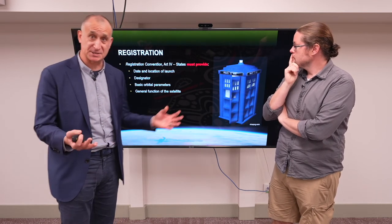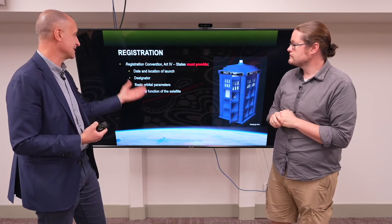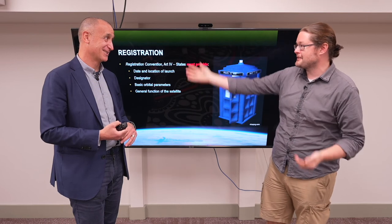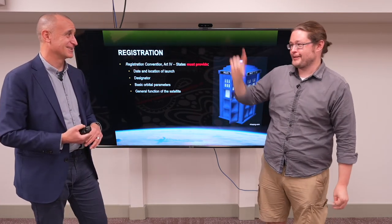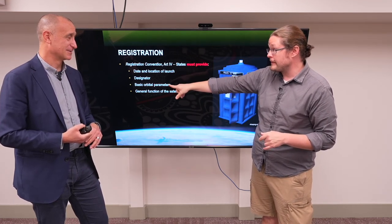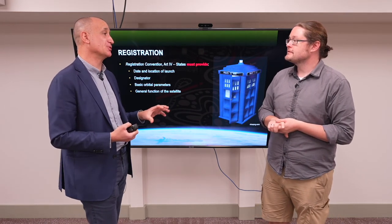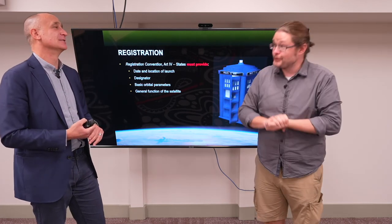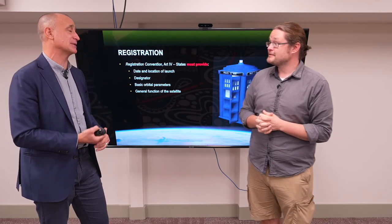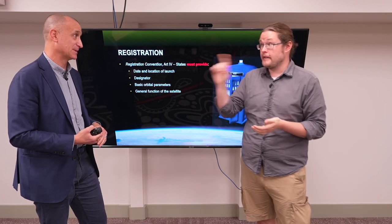There is also an obligation of registration: if you're going to send a space object up, you're obliged to register it. The required information is not extensive — the date and location of launch, the designator, basic orbital parameters, and the general function of the satellite. A lot of people think satellites are hidden, but you can go to these databases and look them up — even US National Reconnaissance Office satellites. You can see when it was launched, where it was launched, and basically where it's orbiting. However, there's no obligation to keep the registry up to the moment, so you can visit the UN Office for Outer Space Affairs' space object register and find a lot of information, but you won't be able to use it for space traffic management.